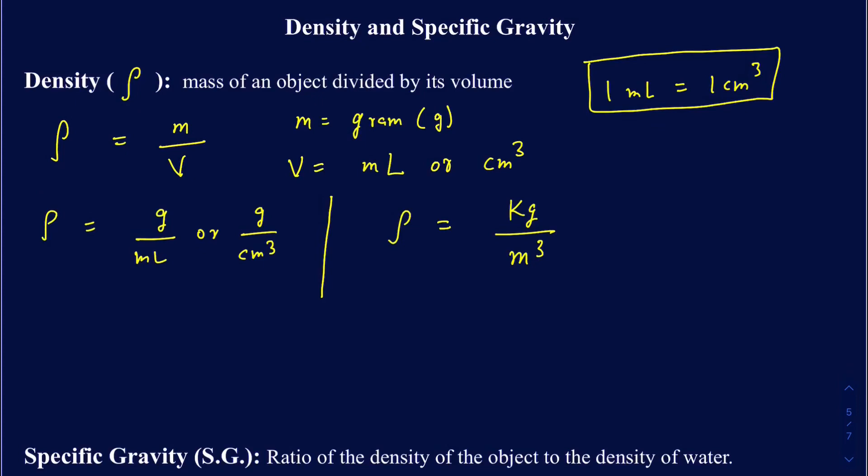To find density, you need both mass and volume. Finding mass is straightforward — just place the object on a balance or weighing machine and it reads the mass in grams or kilograms. Finding volume is a bit trickier. For regularly shaped objects like spheres, cones, or cylinders, you can measure the dimensions and use the appropriate volume formula from mathematics.